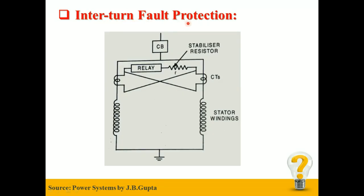Inter-turn Fault Protection: The protection scheme for inter-turn fault is shown in the figure. The primaries of the CTs are inserted in parallel paths, and the secondaries of the CTs are cross-connected as you can see in the figure. When there is no fault, the current flowing through the parallel paths of the stator winding will be equal, so no current will flow through the relay. But during an inter-turn fault in the phase winding, the currents flowing through the two parallel paths will be different, and a current proportional to the difference of the two currents will flow through the relay, which will send a trip signal to the circuit breaker in order to protect the stator winding against the inter-turn fault.